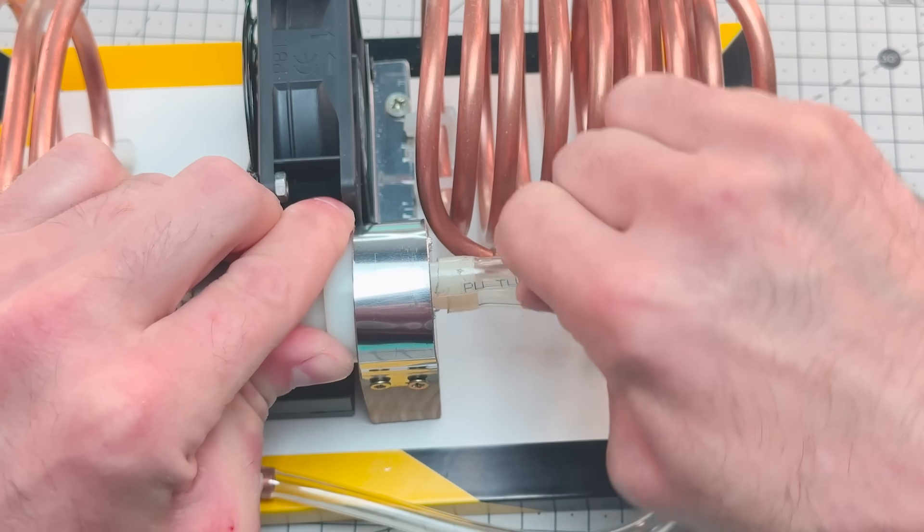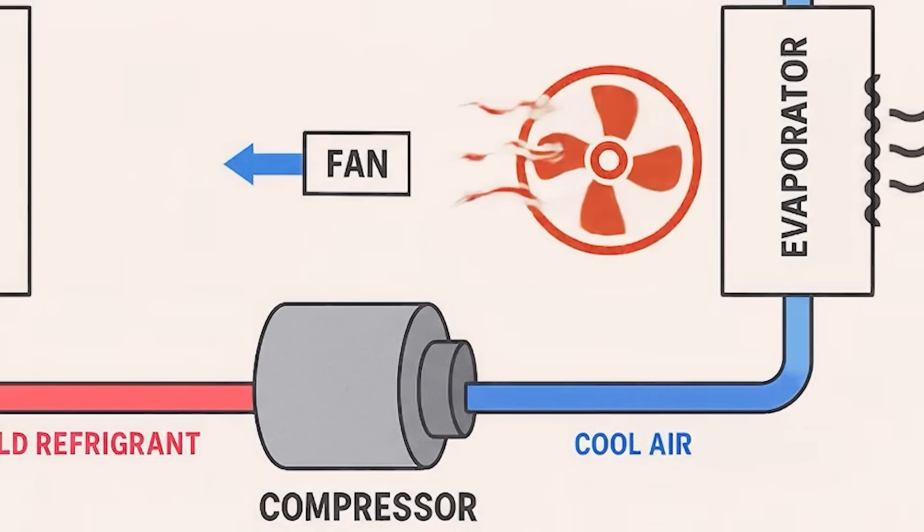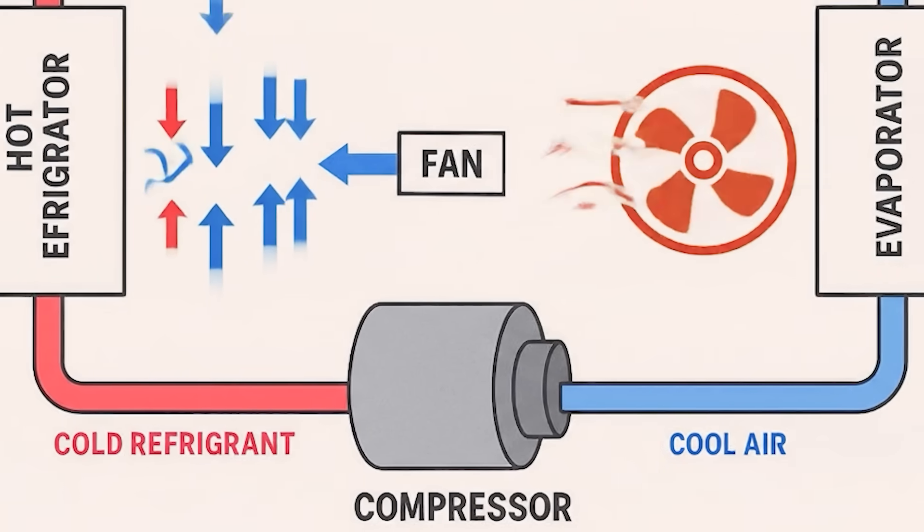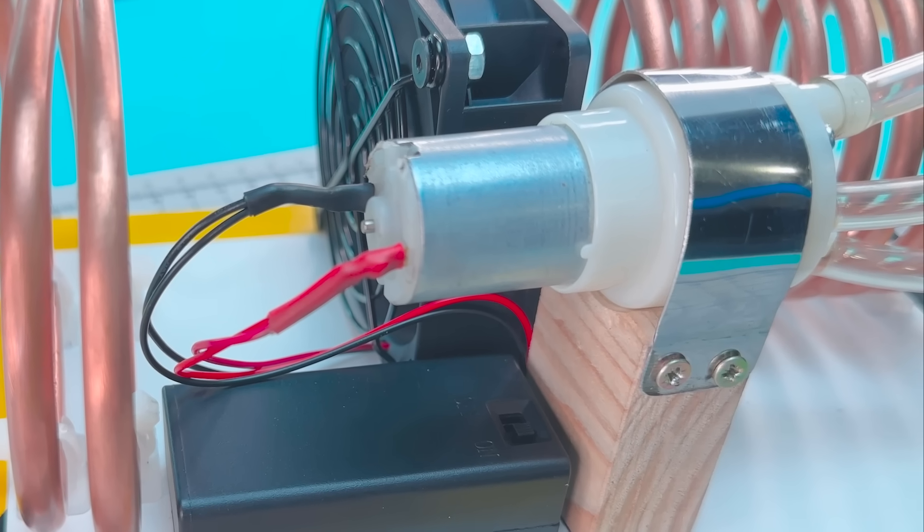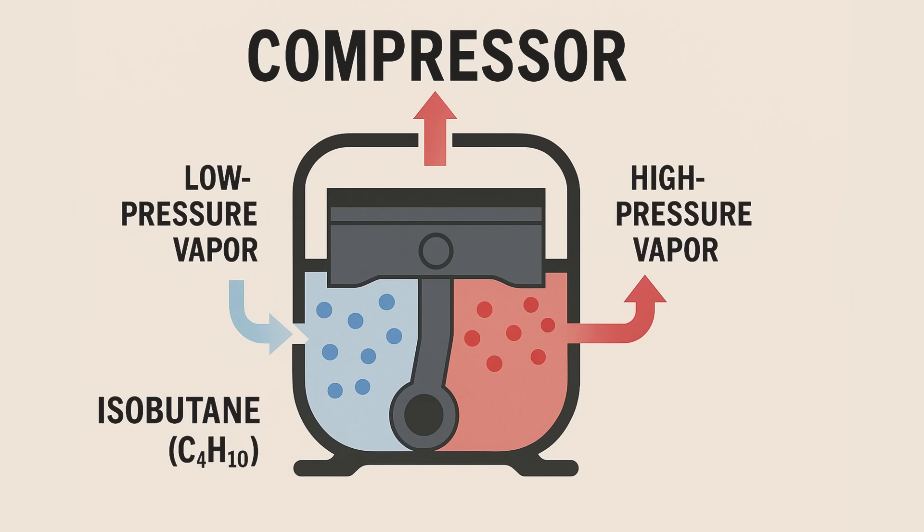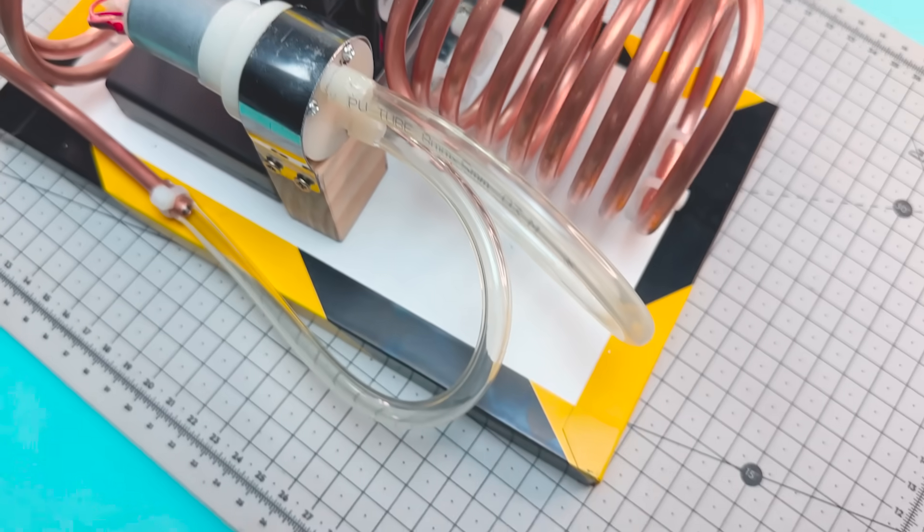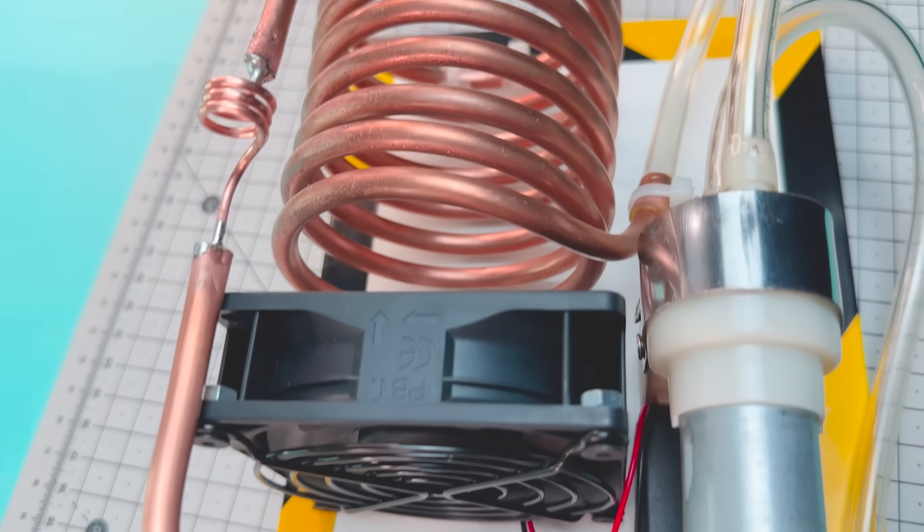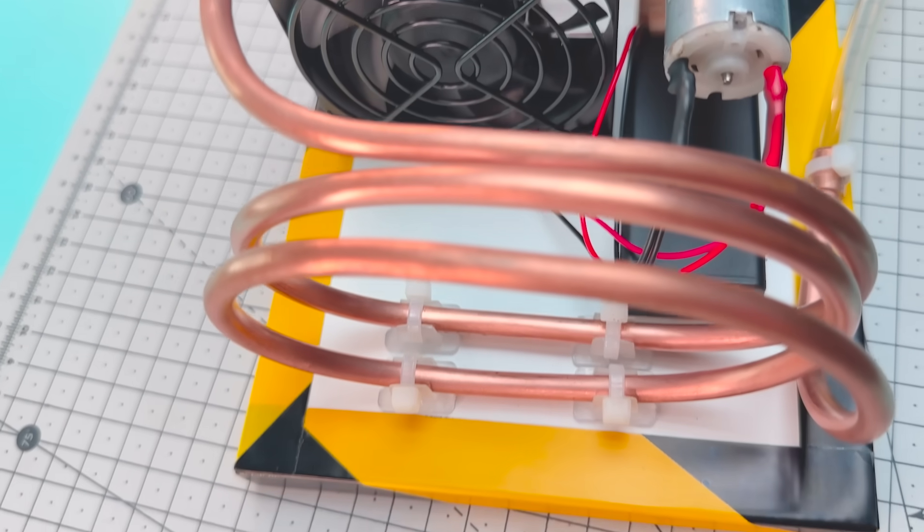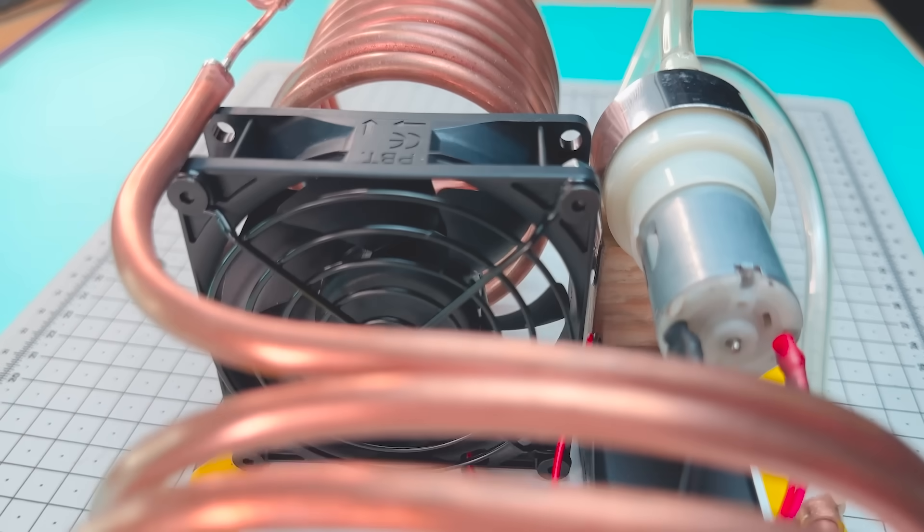Once the gas evaporates, it needs to become liquid again to repeat the process. That's where the pump comes in, simulating the role of a compressor. It collects the low pressure gas and compresses it, increasing its temperature. Then as it passes through another section of the circuit, the gas releases that heat into the environment and condenses. It becomes liquid again, and the circuit is complete.